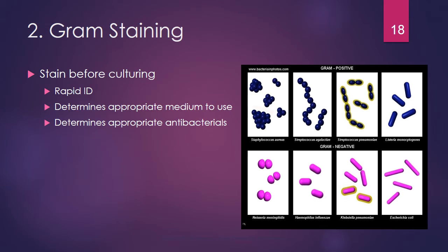You should stain before you culture, as it helps with rapid identification of the bacteria, determines the appropriate medium to use — certain agar plates work better for gram-positive or gram-negative bacteria — and helps determine the appropriate antibacterial. A chart shows examples including staphylococcus and streptococcus as gram-positive cocci, bacilli as rod-shaped gram-positive bacteria, and E. coli as an example of gram-negative bacteria.